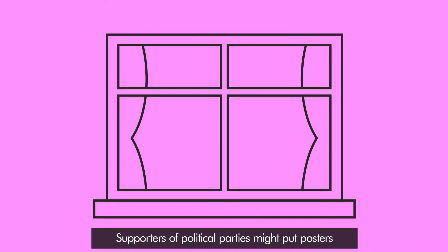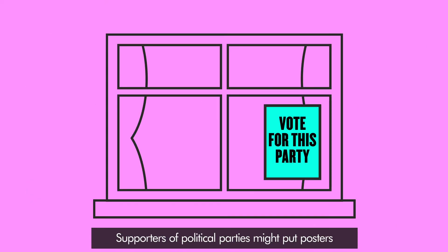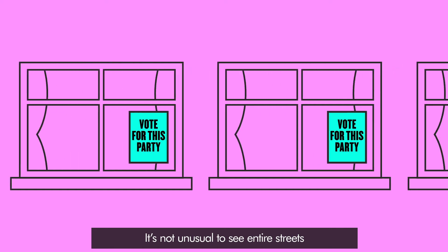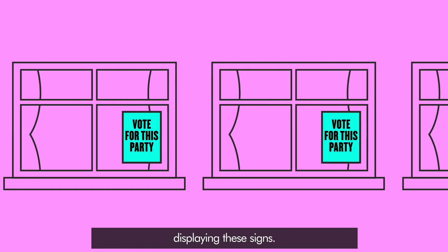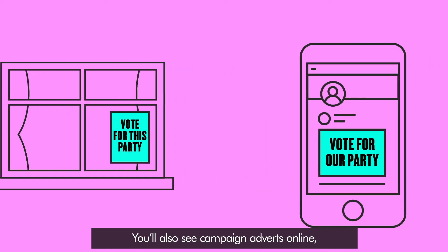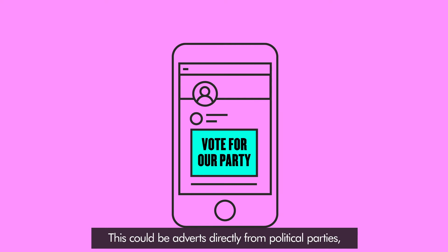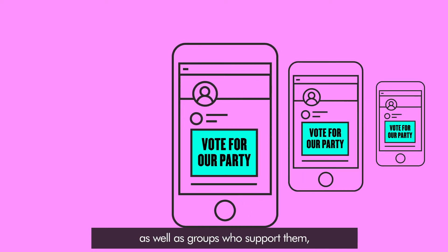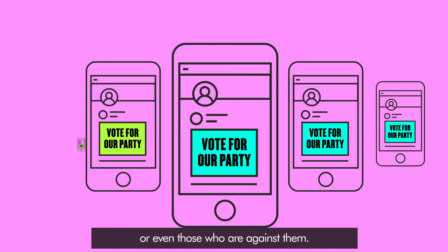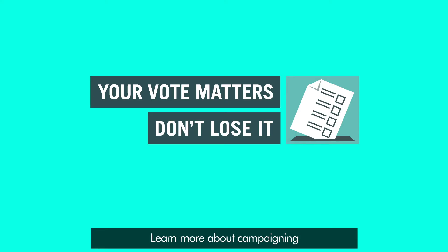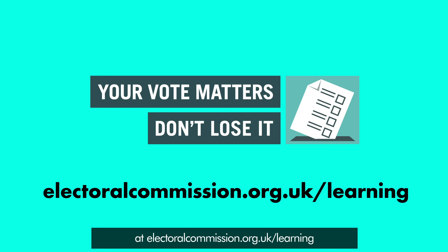Supporters of political parties might put posters in their windows. It's not unusual to see entire streets displaying these signs. You'll also see campaign adverts online, including on social media. This could be adverts directly from political parties, as well as groups who support them, or even those who are against them. Learn more about campaigning at electoralcommission.org.uk/learning.